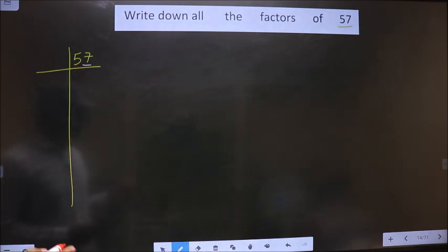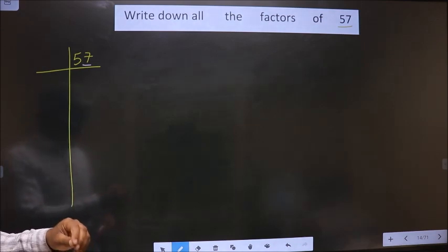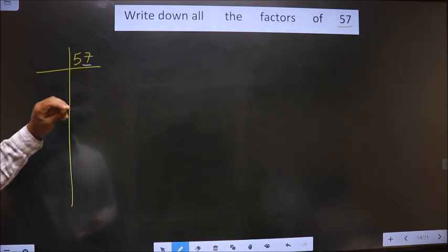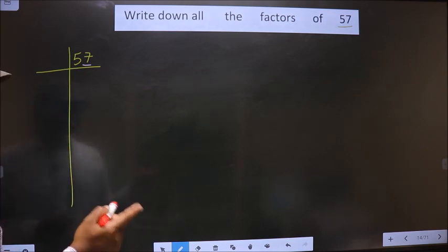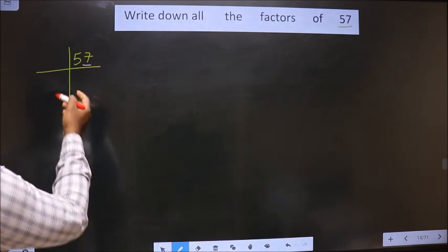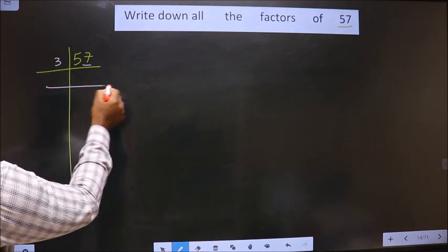Next prime number is 3. To check divisibility by 3, we should add the digits. That is 5 plus 7, which equals 12. 12 is divisible by 3, so this number is also divisible by 3, so I take 3 here.